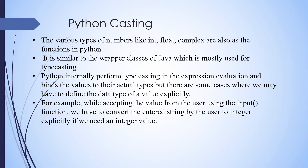For example, if I specify a value of 'a' in float and now I want to change it into int, this is called type casting. When we change the type of a variable, Python internally performs type casting in the expression evaluation and binds the value to their actual types.